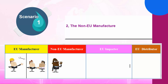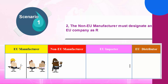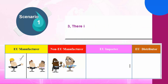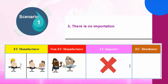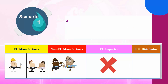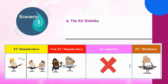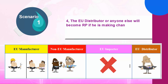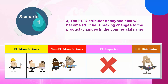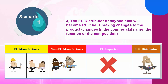Continuing Scenario 1: (3) There is no importation, hence no importer. (4) The EU distributor or anyone else will become RP if they are making changes to the product — changes in the commercial name, the function, or the composition.